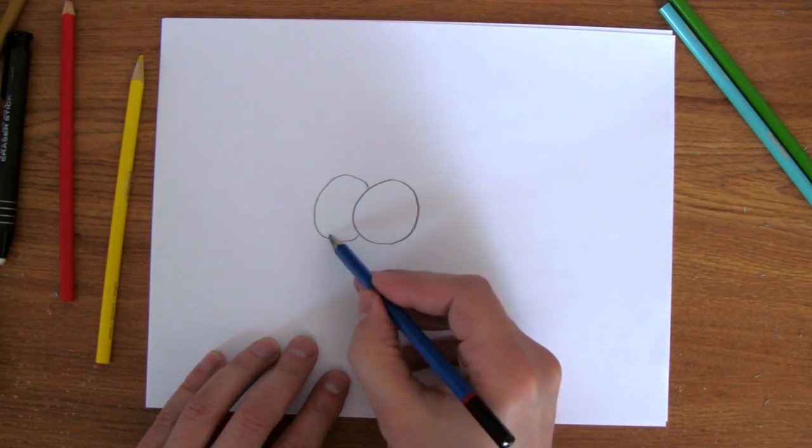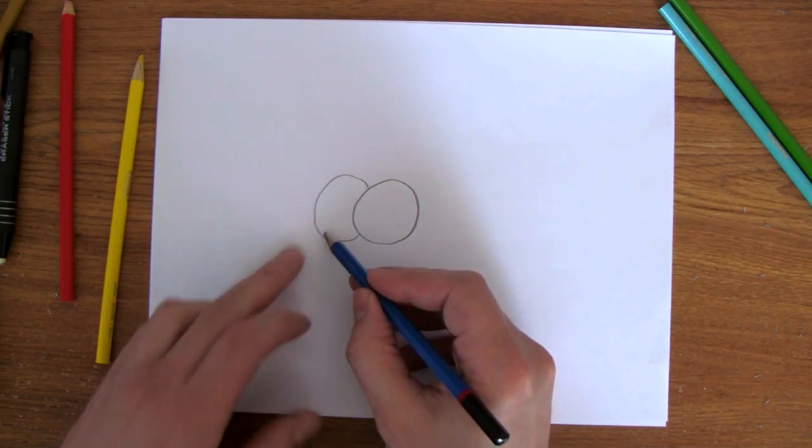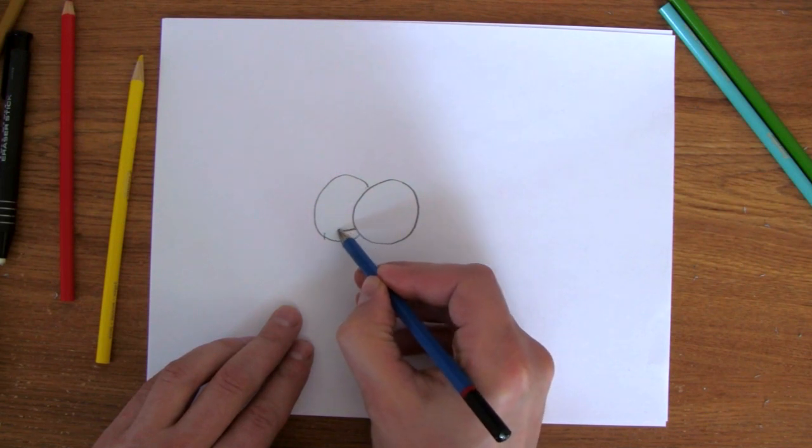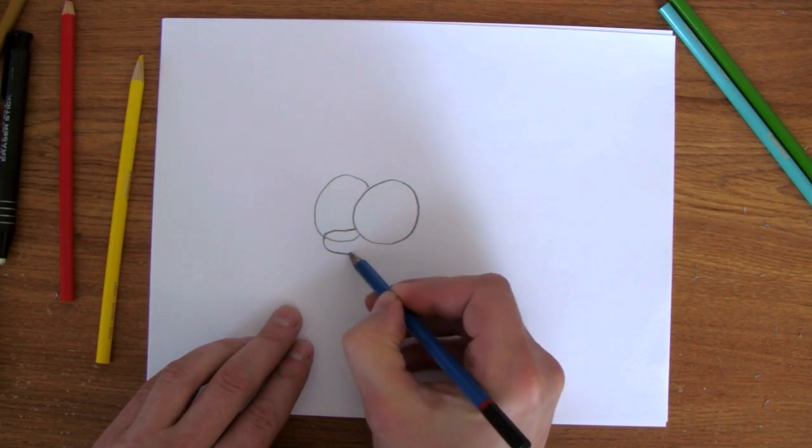And then his nose. His nose doesn't quite go to the end of his eyes. The nose is going to end up here. So, it goes like this. There we go.